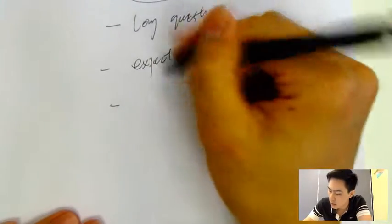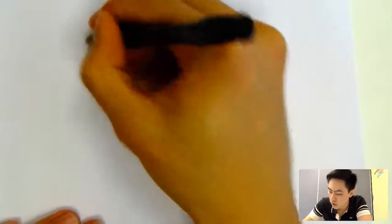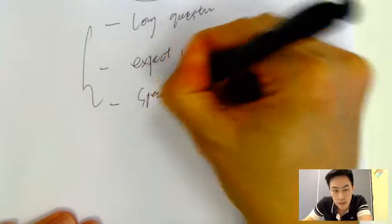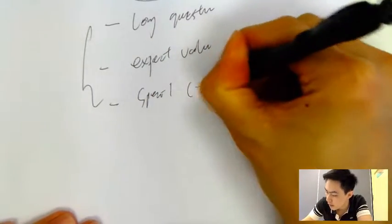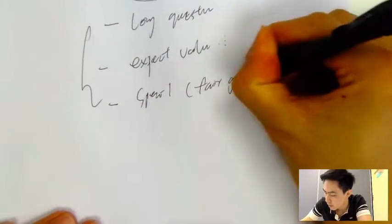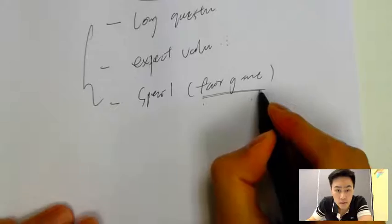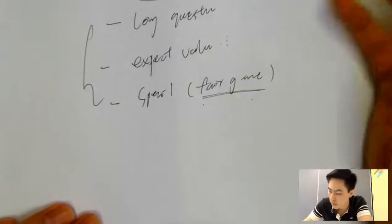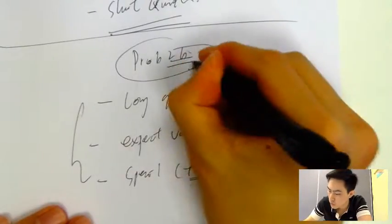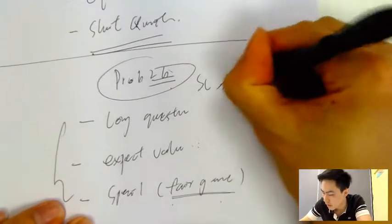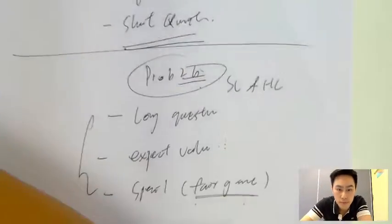And also one more special question type — that is a fair game question. Whenever you see fair game, what does it mean? It means an expected value. So for note 2b, this one is for SL and R level notes.